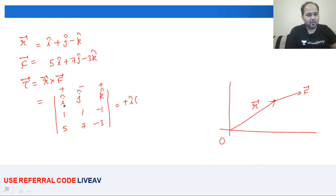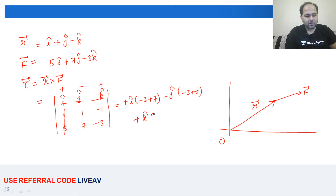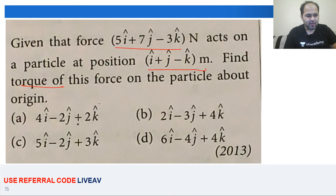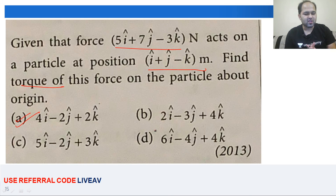τ = +î [(1)(−3) − (−1)(7)] − ĵ [(1)(−3) − (−1)(5)] + k̂ [(1)(7) − (1)(5)]. यह आया: î(−3 + 7) − ĵ(−3 + 5) + k̂(7 − 5) = 4î − 2ĵ + 2k̂. So 4î − 2ĵ + 2k̂ — A option will be our answer for AIIMS 2013.